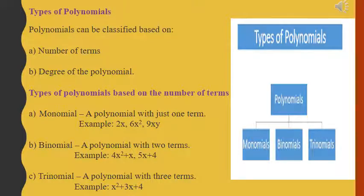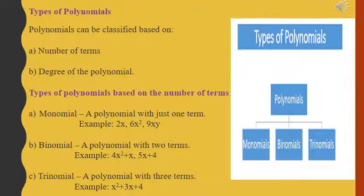In the second type, if a polynomial consists of two terms — like 4x squared plus x, 5x plus 4, or 7y plus 6 — these are examples of binomials. The third type is an expression or polynomial which consists of three terms, and this is called a trinomial.